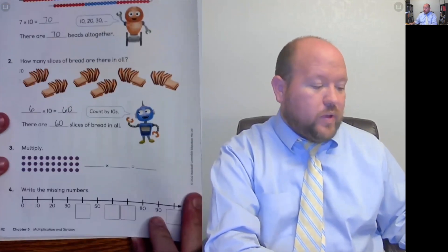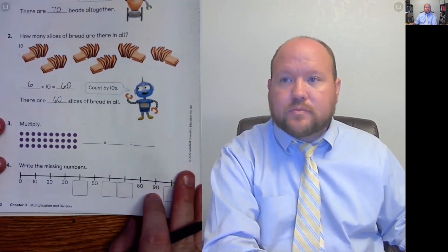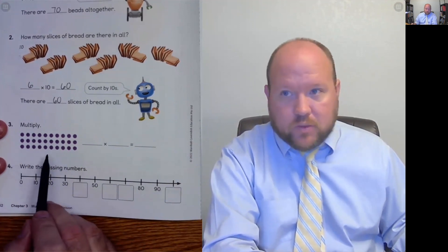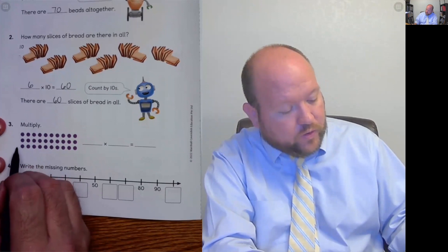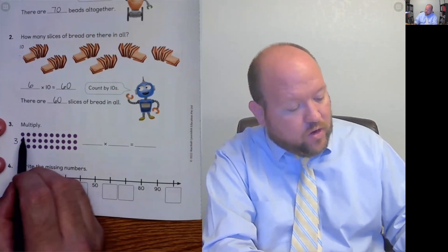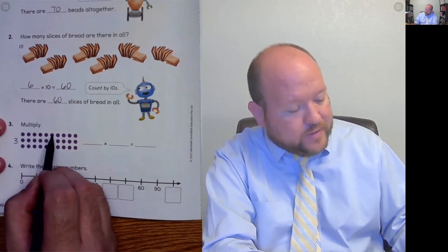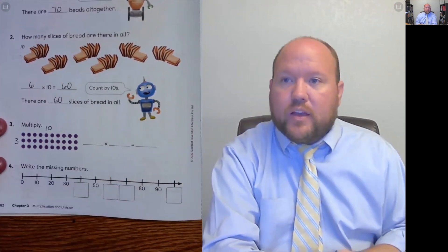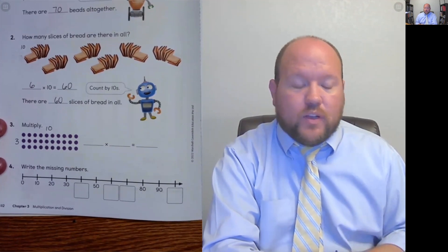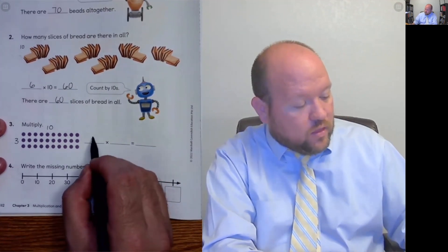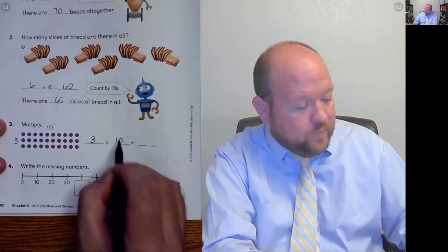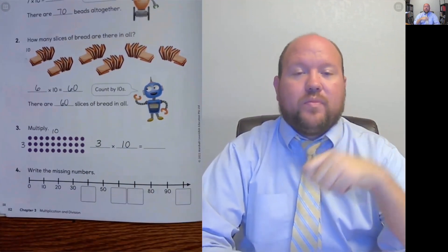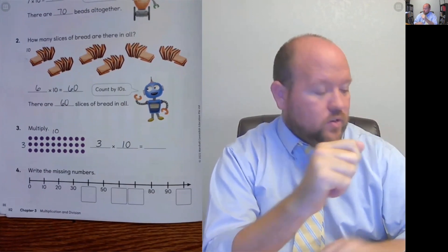Next, we have an array. So here we have an array and we need to figure out what this problem is. We have 3 rows and 10 columns. So how do we understand that? Well, we can say there are 3 times 10. 3 times 10 is, if you don't know, 10, 20, 30.